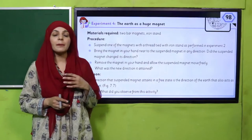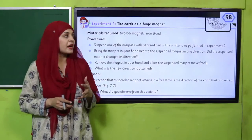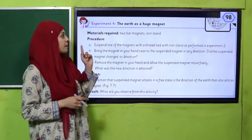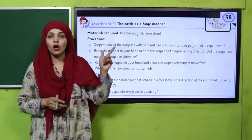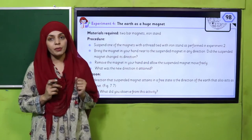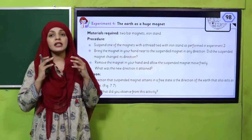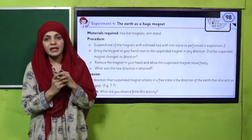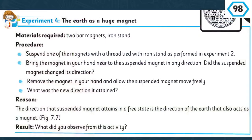In the activity, we will perform the experiment given in your book — Experiment Number Four on Page Number 98. In this experiment we have to find out how the Earth acts as a huge magnet, and in what way.